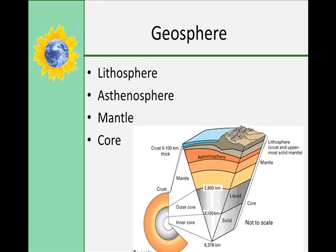The core begins 2,900 kilometers below the surface, and it is made up of two parts. The outer core is liquid, and the inner core is solid. The inner core is mostly made up of iron, and I'll tell you why we know this much later in a future lecture.